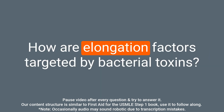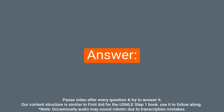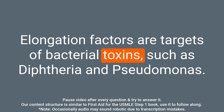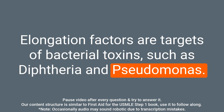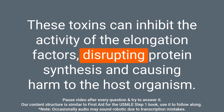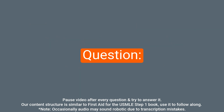Question: How are elongation factors targeted by bacterial toxins? Answer: Elongation factors are targets of bacterial toxins, such as diphtheria and Pseudomonas. These toxins can inhibit the activity of the elongation factors, disrupting protein synthesis and causing harm to the host organism.